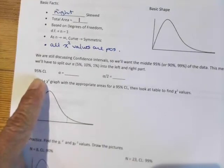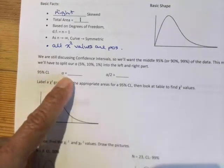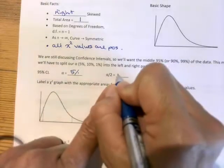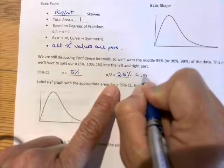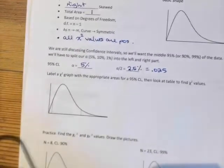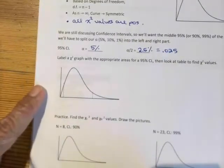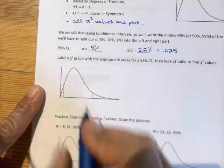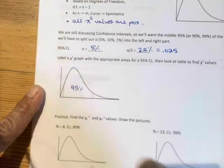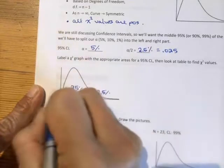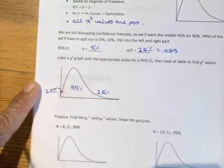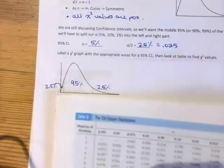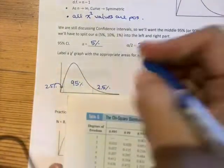So if we look at a 95% confidence level, that means alpha is the amount left over, so that would be 5%. So that our alpha over 2, so that we can share it, is going to be 2.5%, or as a decimal 0.025. So let's go ahead and I've copied in a chi-square graph. So let's write out what we mean by a 95% confidence interval, where all of those areas are. So 95% in the middle, and that means I have 2.5% on each tail.